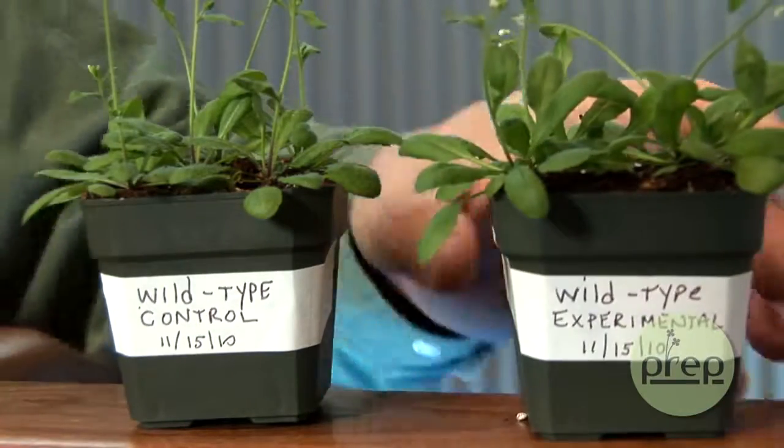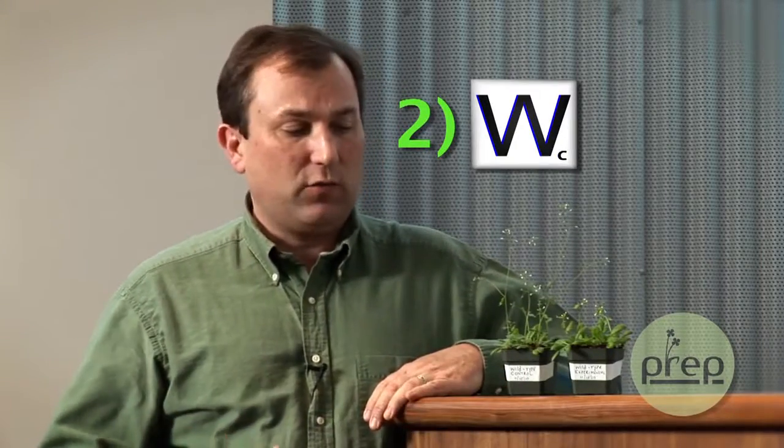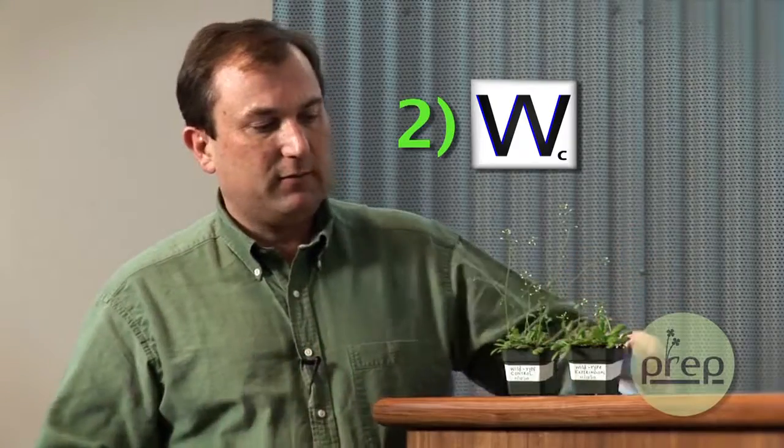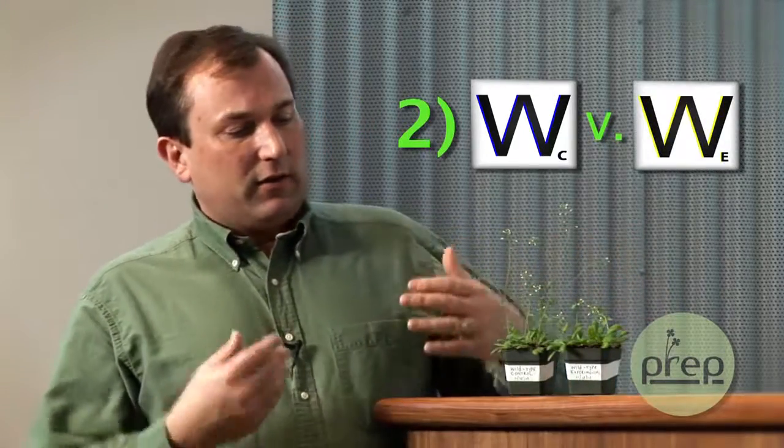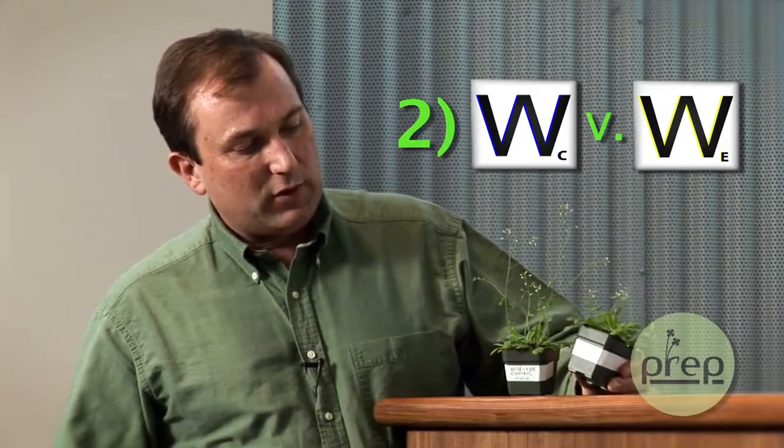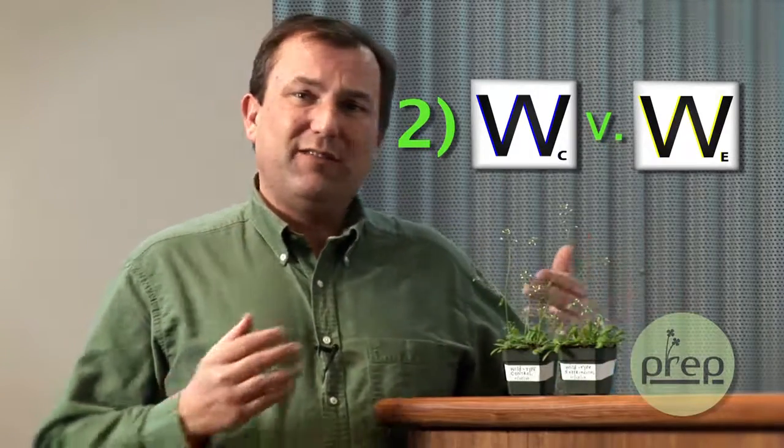Now in this observation, I have two pots of wild type plants. This one here has been grown under the control conditions where I've created everything good for the plant, and this one over here is the plant that has been grown under the experimental growth conditions where we have changed something in its environment.